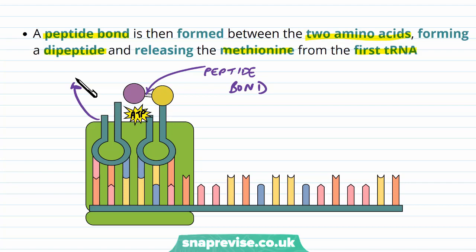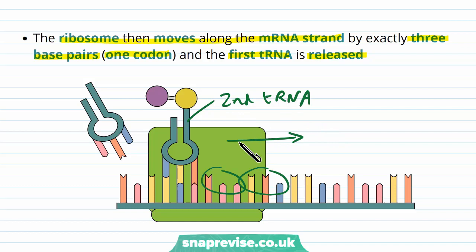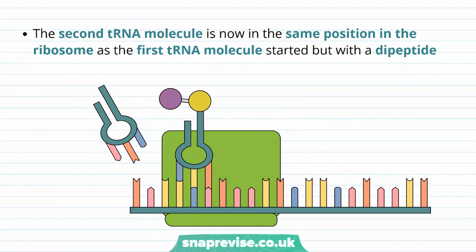The ribosome then continues moving along the mRNA strand by exactly three base pairs at a time — one codon at a time — and the first tRNA that we had is released. The ribosome moves along the mRNA reading codons one by one. The second tRNA is still attached because we're waiting for the third one to bring the next amino acid. We can't have it leave yet because it's still attached to the second amino acid. Meanwhile the first tRNA leaves to do other jobs. Because the ribosome has moved along, the second tRNA molecule is now in the same position in the ribosome as the first tRNA was when it started, but now it has a dipeptide attached to it.